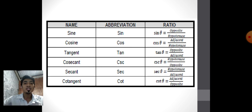These are the trigonometric ratios: sine, cosine, tangent, cosecant, secant, cotangent. Sine is abbreviated by sin, wherein its ratio is opposite over hypotenuse.